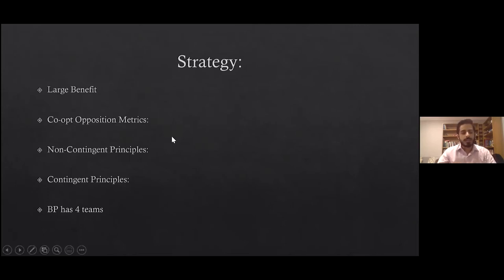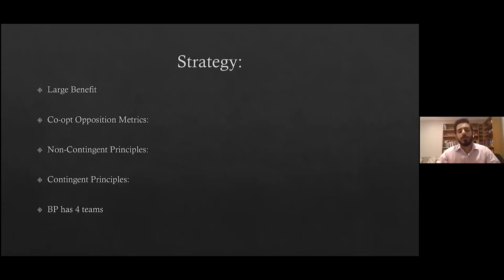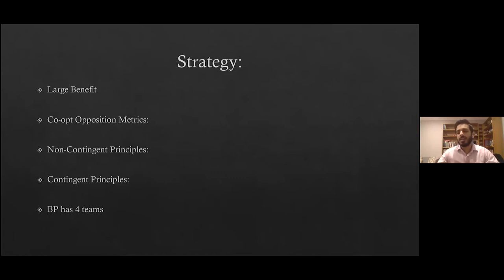The second strategy is co-opting opposition metrics. This one is incredibly effective because it's very obvious why you should win. What you're doing is identifying the metric the other team has set up — what the debate is about — and then explaining why you do better on their own metric. So if opposition says the debate is about improving education quality, you prove on the negative side that you actually get better education policy by not implementing their proposal. Then it's very obvious why you've won the debate, because you've proven you do the thing opposition wants to do much better.